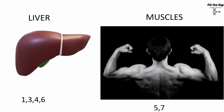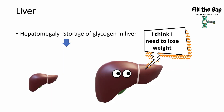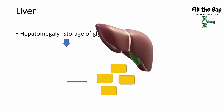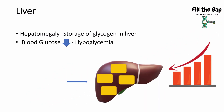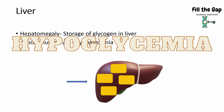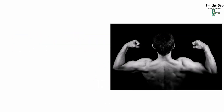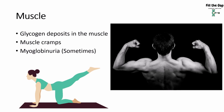Usually the tissues where the body stores it are in the liver or in the muscles. Glycogen storage diseases 1, 3, 4, and 6 are liver-associated, and 5 and 7 are associated with muscles. If deposited in the liver, you'll see hepatomegaly and hypoglycemia, because glycogen is not broken down into glucose. If deposited in the muscle, you'll get muscle cramps, myoglobinuria, and exercise-induced rise in blood lactate levels.